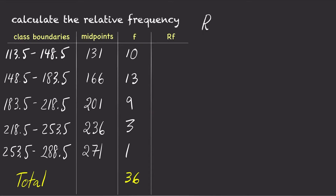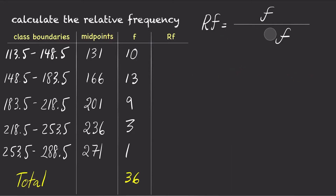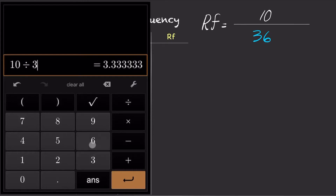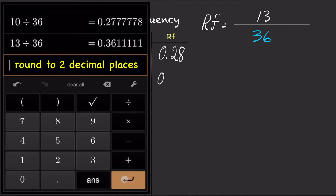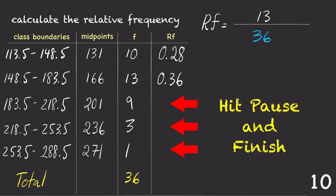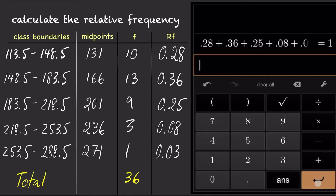To calculate the relative frequency for each class, simply take the frequency for each class and divide it by the total frequency. So for the first class, going from 113.5 to 148.5, the relative frequency is 10 divided by 36 equals 0.28. And for the second class, going from 148.5 to 183.5, the relative frequency is 13 divided by 36 equals 0.36. Add up the relative frequency from each class and the total should be 1, or very close to 1 due to rounding errors from each step.